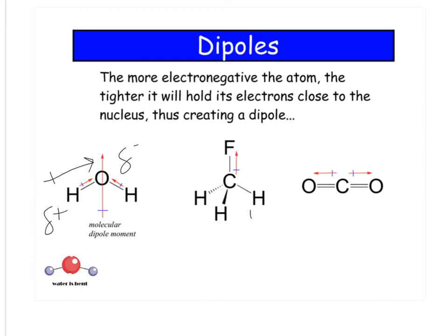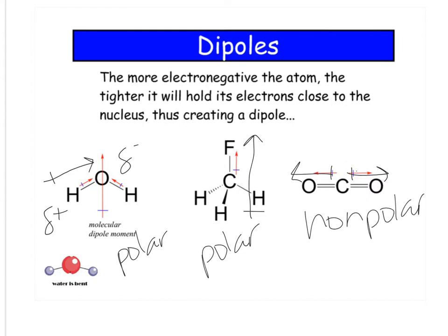Here, the electrons are really going to hang out around fluorine because fluorine is very electronegative. So these two molecules would be polar. Here, although carbon is less electronegative than oxygen, it has two dipole moments. Since they're in equal and opposite directions, overall, this molecule is nonpolar because they cancel each other out.